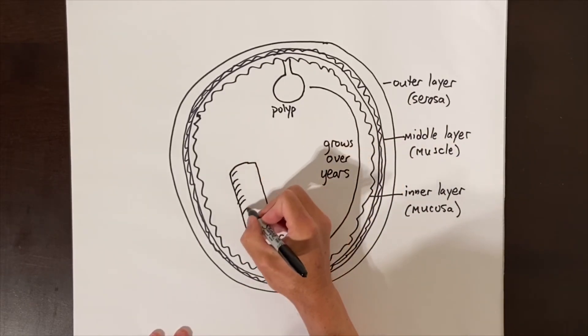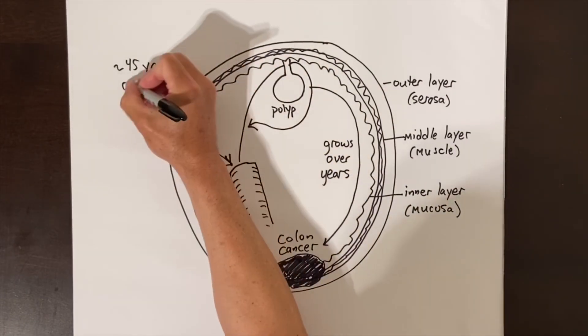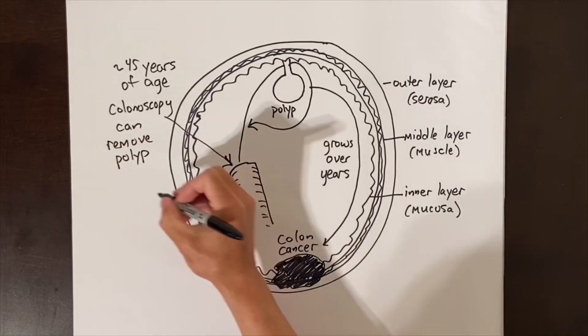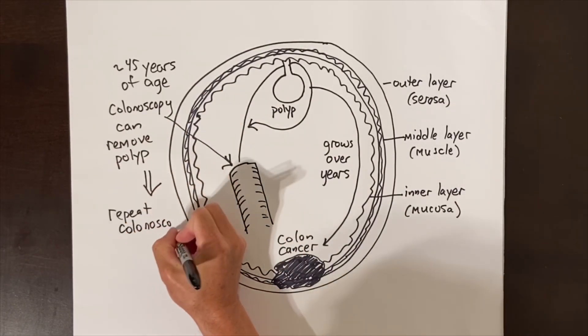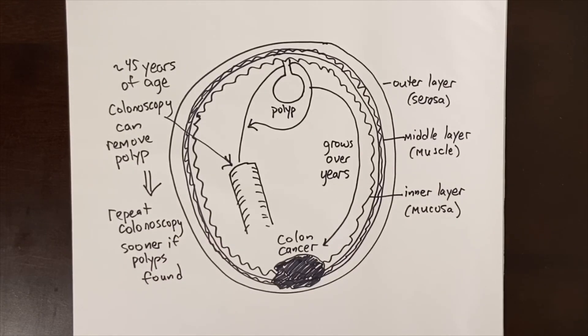When you start getting a colonoscopy at 45 years of age or maybe even earlier, the doctor is looking for polyps. Not every kind of polyp will turn into a cancer. The doctor will be sure to figure out if you have the dangerous kind or not. The goal of a colonoscopy is to find the polyps and remove them before they can turn into cancer. It takes many years for the progression from polyp to cancer, which is why getting a colonoscopy is okay every 10 years unless the doctor finds a polyp, in which case you should do a repeat colonoscopy in five years or even sooner perhaps.